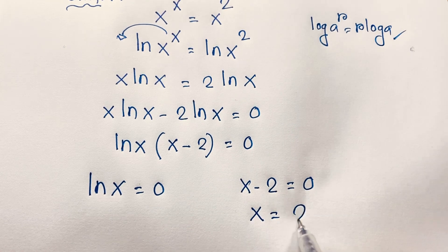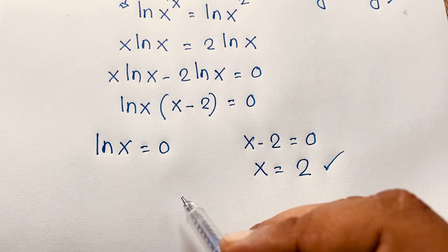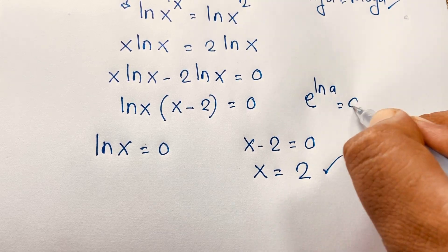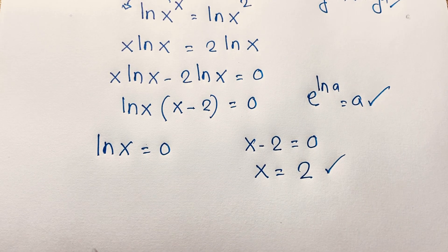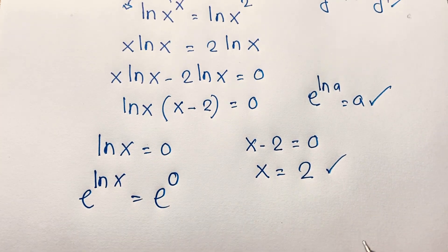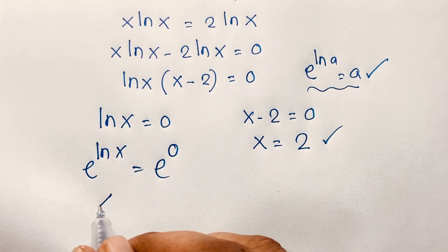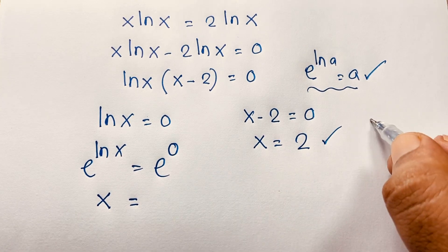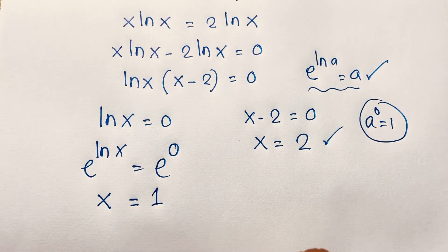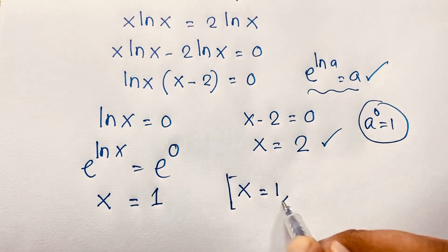From x − 2 = 0, we get x = 2. For the other case, ln(x) = 0: using the formula e^(ln a) = a, I apply e to both sides — e^(ln x) = e^0. So x = e^0, and since a^0 = 1 always, e^0 = 1. Therefore x = 1.